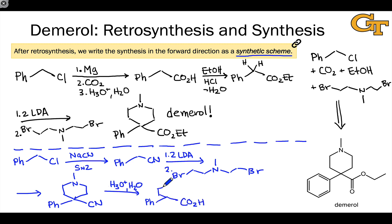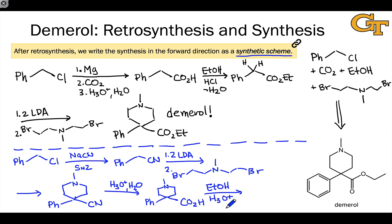Then, as we did above, we convert the carboxylic acid into an ester using Fischer esterification conditions with solvent quantities of ethanol, since we want to make an ethyl ester. An acid of your choice — H3O+ or HCl — is totally fine. This results in the loss of water, and in fact this goes right to Demerol, which is our target.